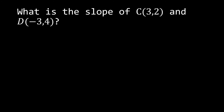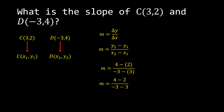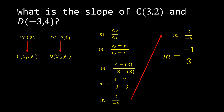Let's have another example. What is the slope of C(3, 2) and D(-3, 4)? C is (3, 2), represented as x sub 1, y sub 1, and D is (-3, 4), represented by x sub 2, y sub 2. Slope is change in y over change in x, so y sub 2 minus y sub 1 over x sub 2 minus x sub 1 gives us 4 minus 2 all over negative 3 minus 3, which is 2 over negative 6. Simplifying, m is equal to negative one-third.